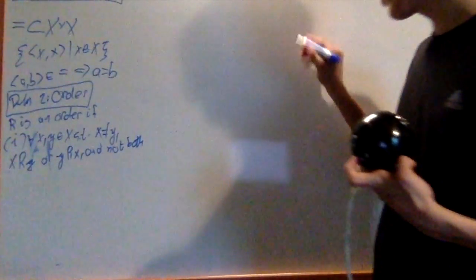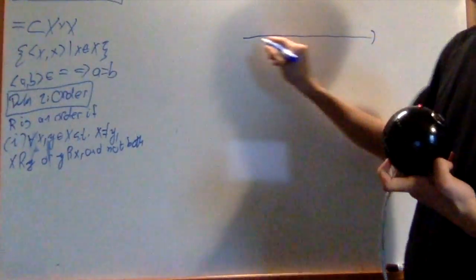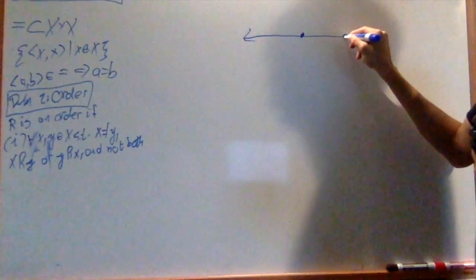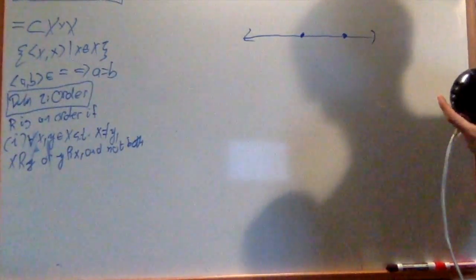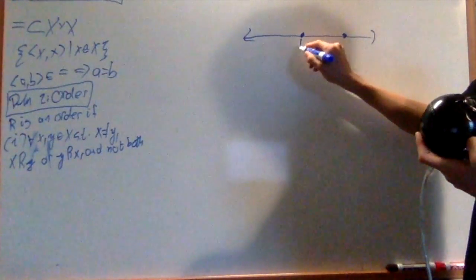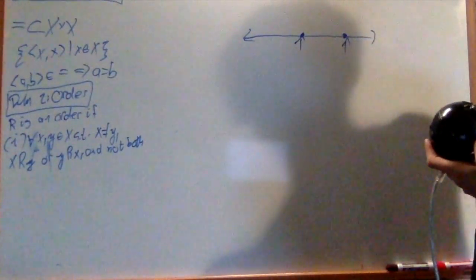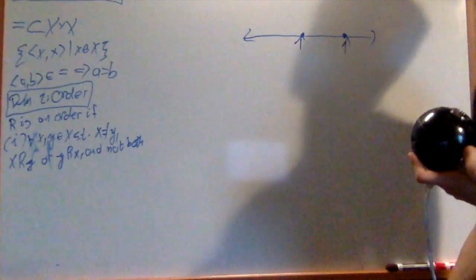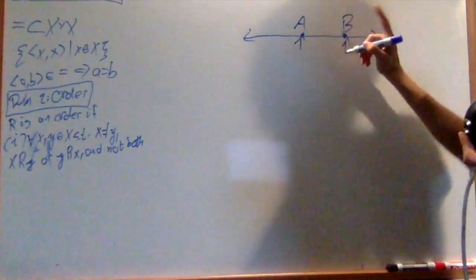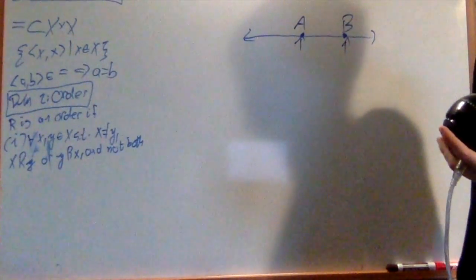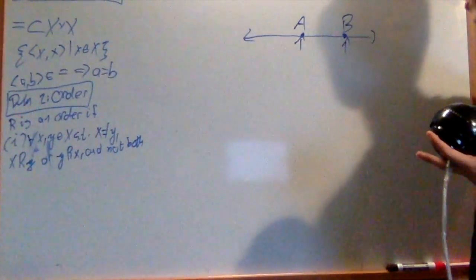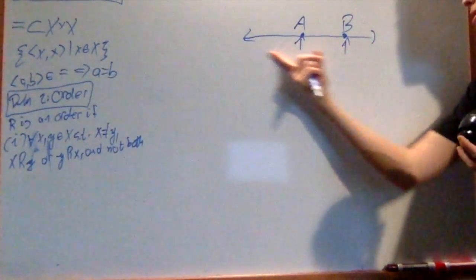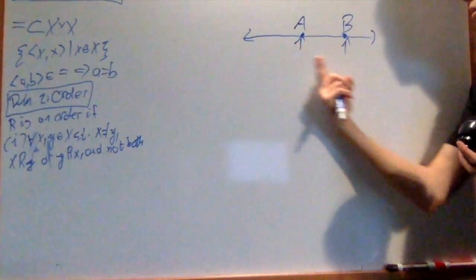So for example, on the real line, say I have two points that are not equal to each other. They're two distinct points. Well, either this one is going to be less than this one or this one is going to be less than this one. So either a is less than b or b is less than a. And it can't be both of them, because if a was less than b and b is less than a, that violates the idea of order.